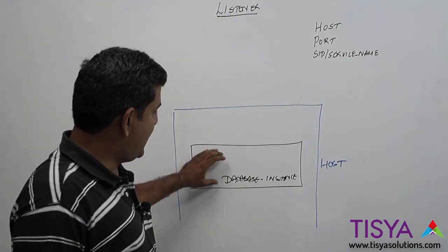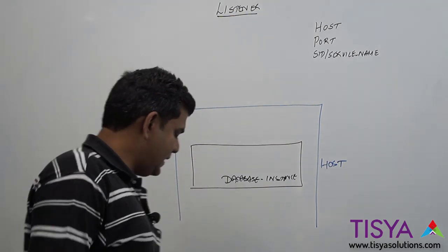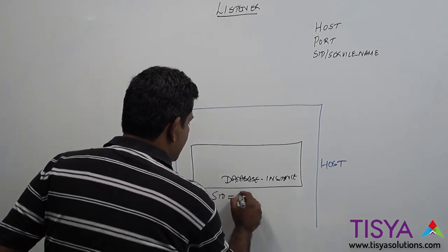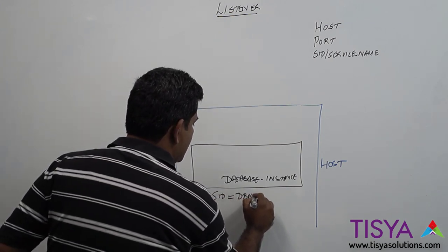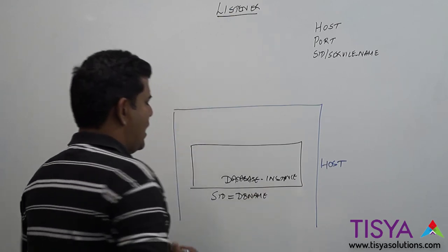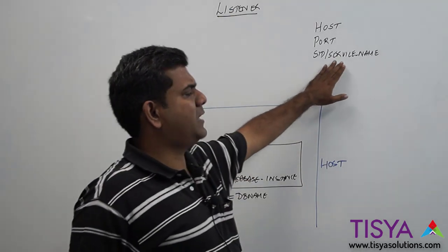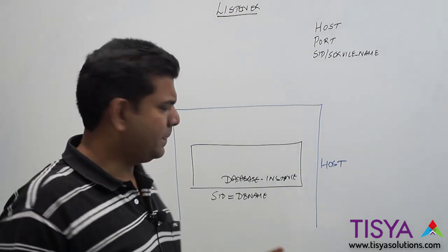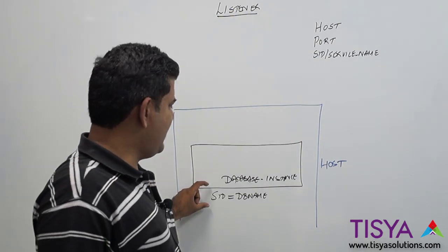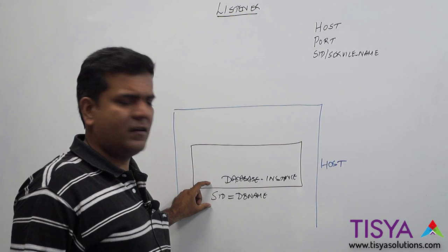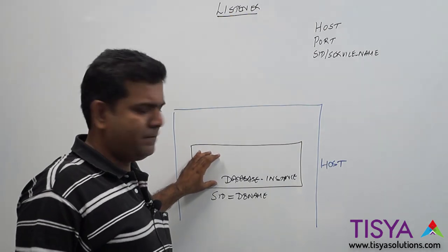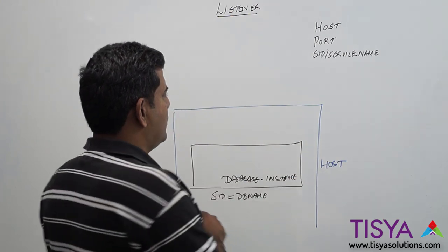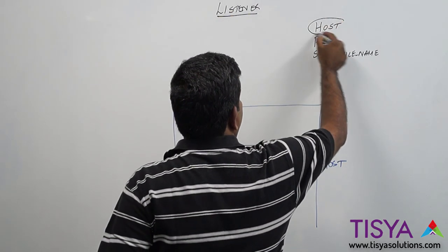The database instance would typically have an SID, which is equivalent to the DB name. I will talk about what the service name is later on. For now, let us say SID and service name are the same. SID would be the service identifier, or in other words, the instance name. The database is running on a host, so the host piece is taken care of.